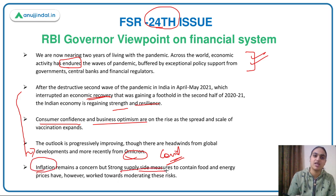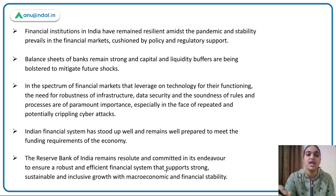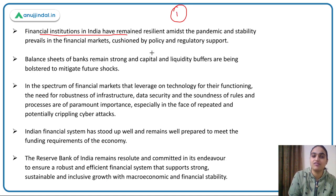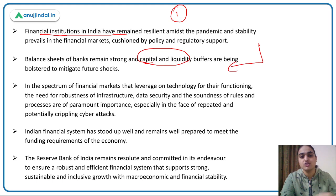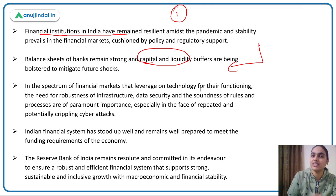Inflation is also posing a major problem, but strong supply-side measures are being taken to deal with it. We have seen food and energy prices rise, though different measures were taken to bring them back within tolerable levels. Financial institutions in India have remained resilient because banks have maintained enough capital and liquidity buffers, which have helped them mitigate shocks during the pandemic.